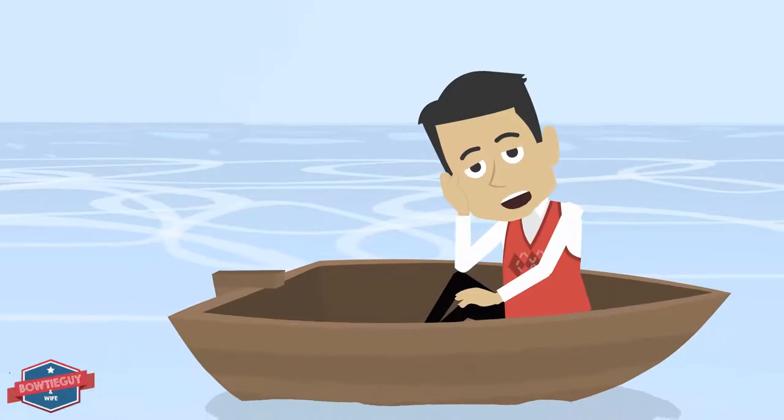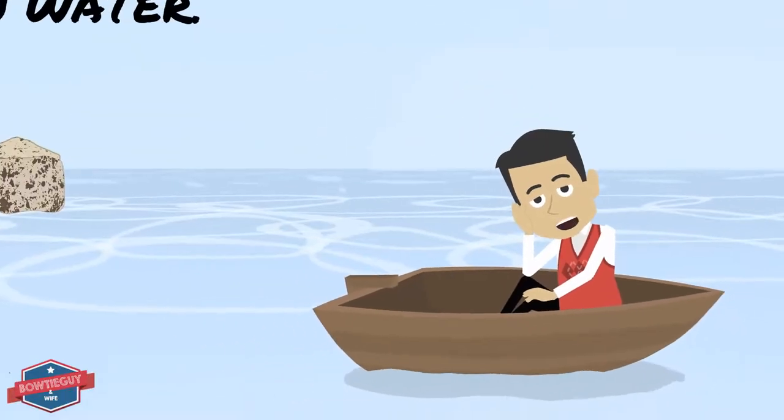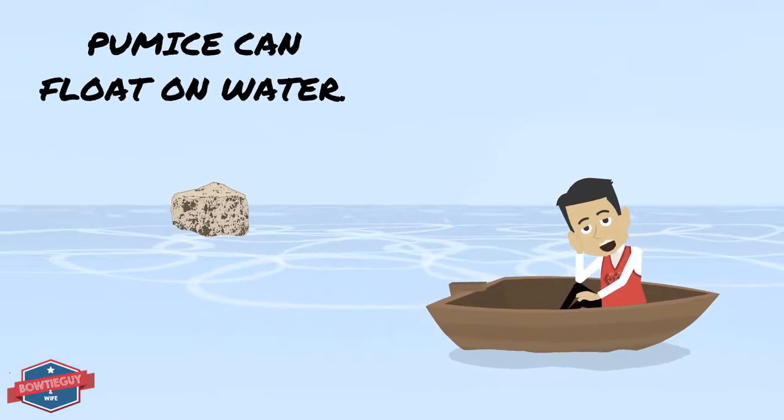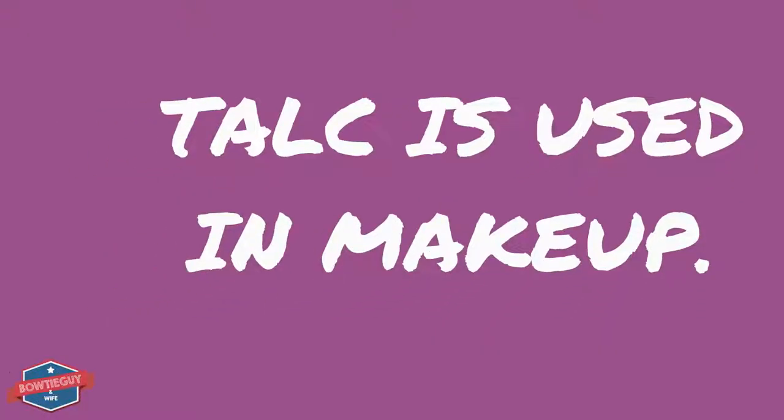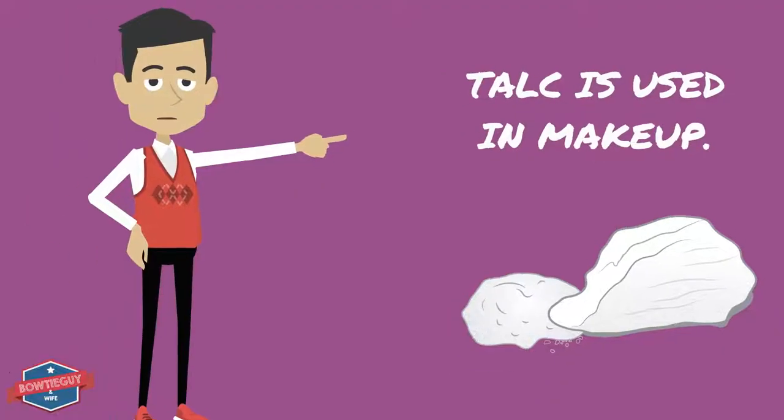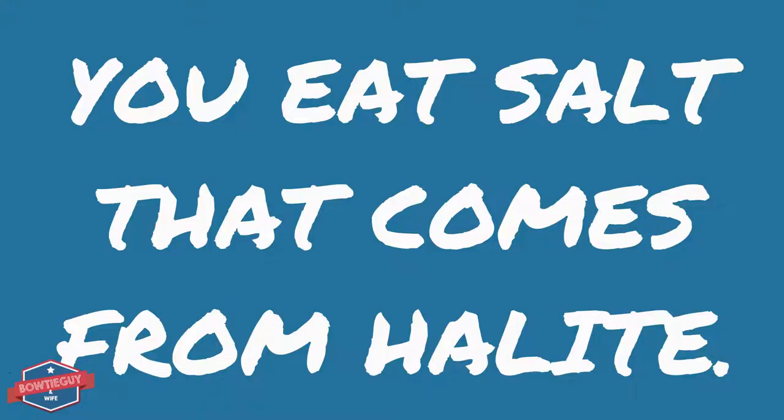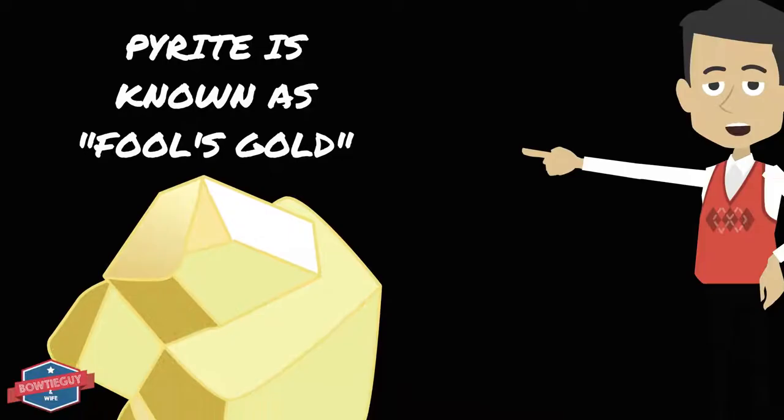But one thing we do know is that rocks and minerals are very unique and diverse. Pumice can float on water. Magnetite is a magnet. Talc is used in makeup. You eat salt that comes from halite, and pyrite is known as fool's gold.